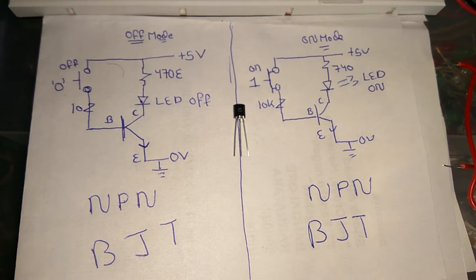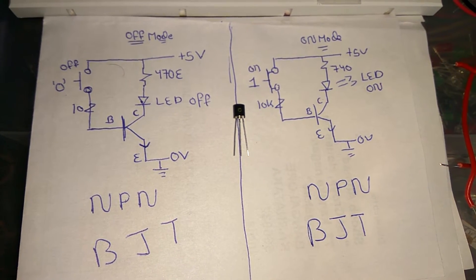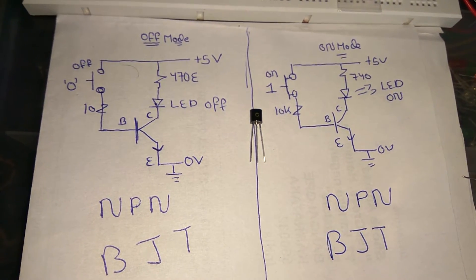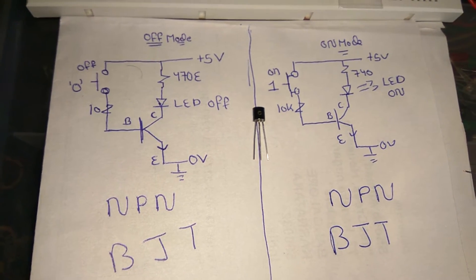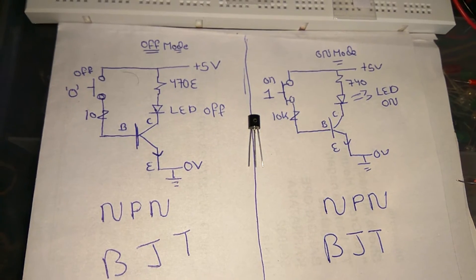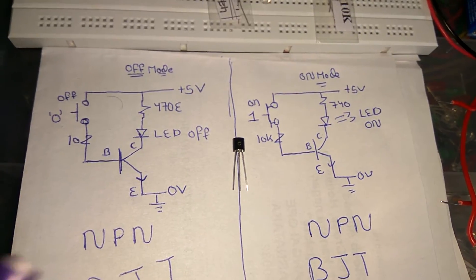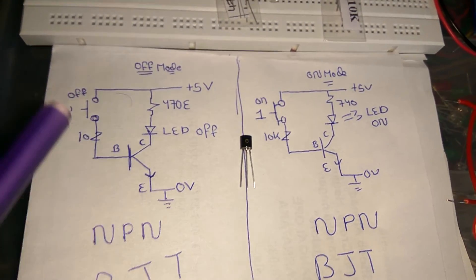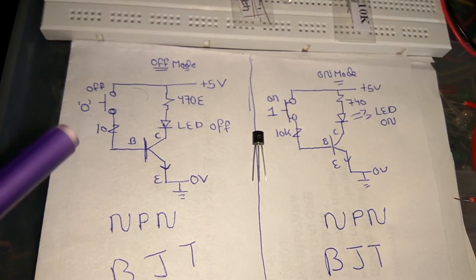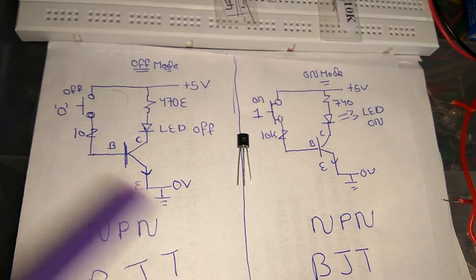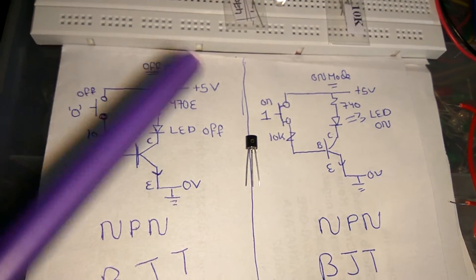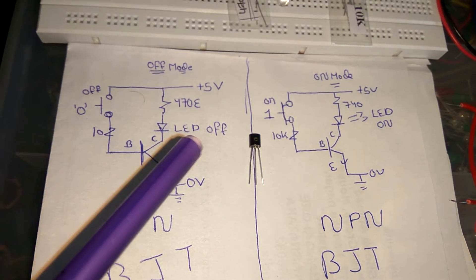Let's look at two diagrams: one in off mode and one in on mode. In the off mode diagram, as we know from physics, current conduction requires a potential difference. The base is connected to a switch that is off — so base is at zero. Emitter is also at zero, and collector is connected to 5V. Since base and emitter are both zero, there is no potential difference, so zero current flows through the collector loop and the LED is off.